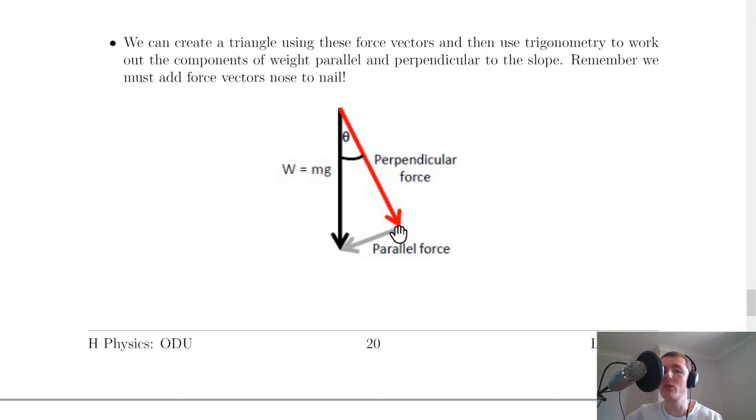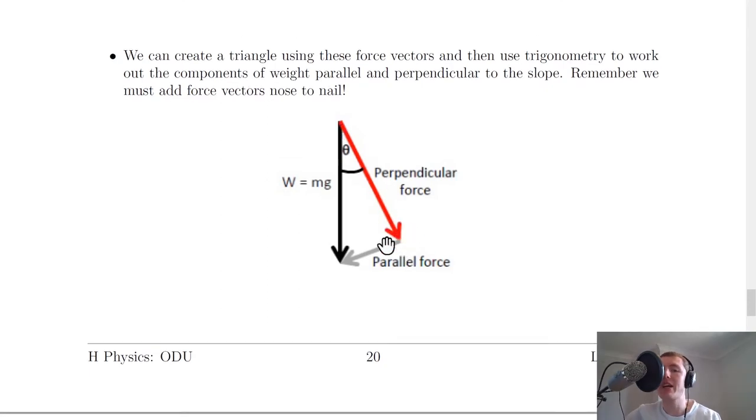That's our parallel force there, now arranged nose to tail so the tail of the parallel force is added to the nose of the perpendicular force. That would be our right angle in there. We can then work out expressions from each side using SOHCAHTOA.